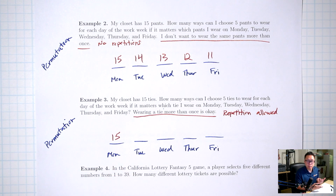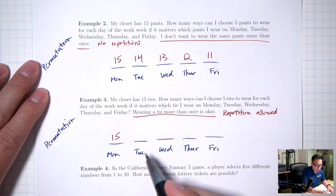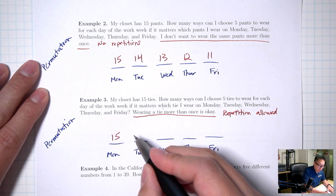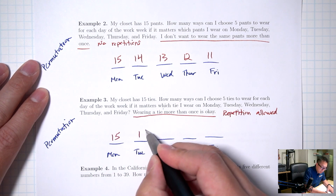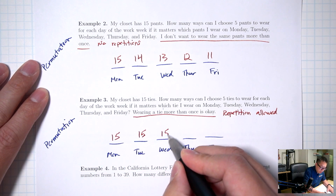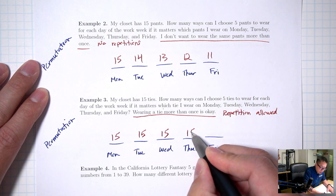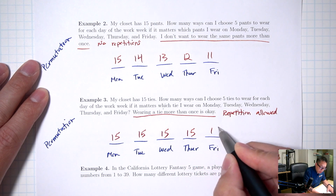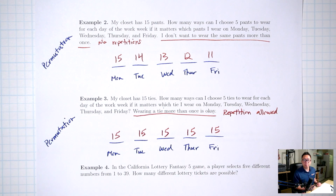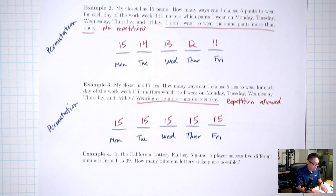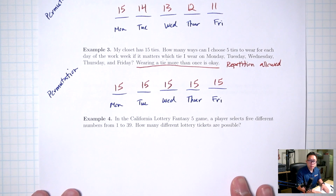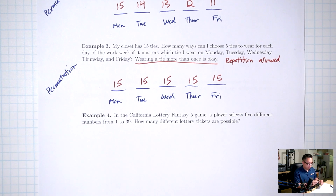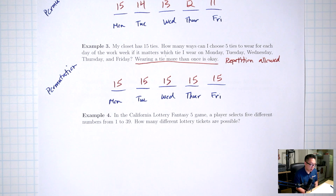Go to your calculator: FUNC, NCR, then type 20 comma 7. The answer is 77,520.